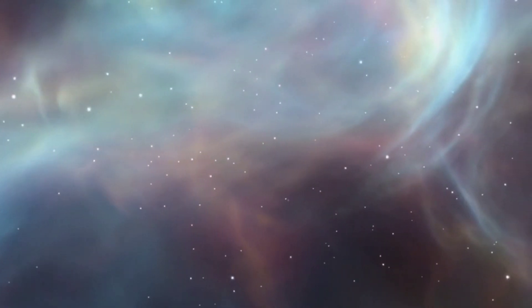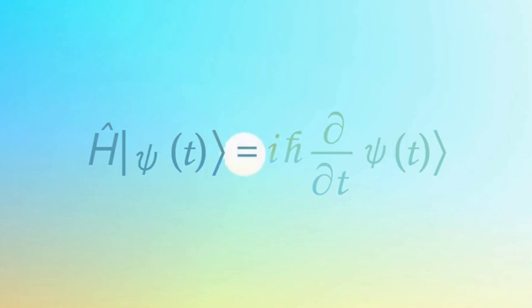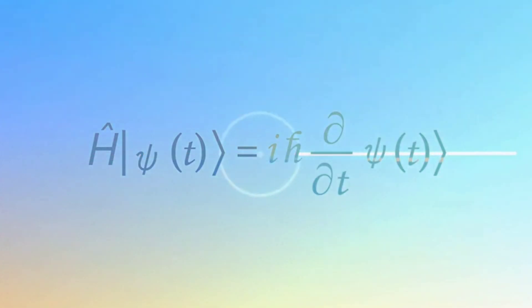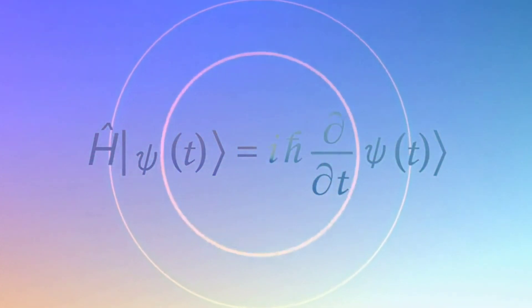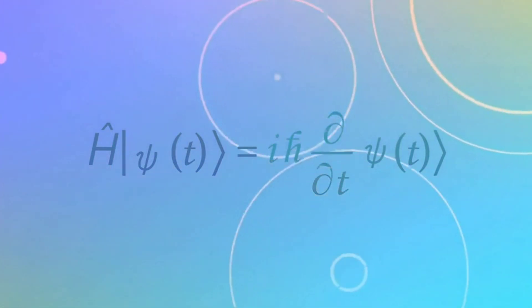One of the main areas where the two theories conflict is in their description of the nature of space and time. According to relativity theory, space and time are continuous and smoothly connected, while in quantum theory, they are described by discrete and non-continuous units known as quanta.